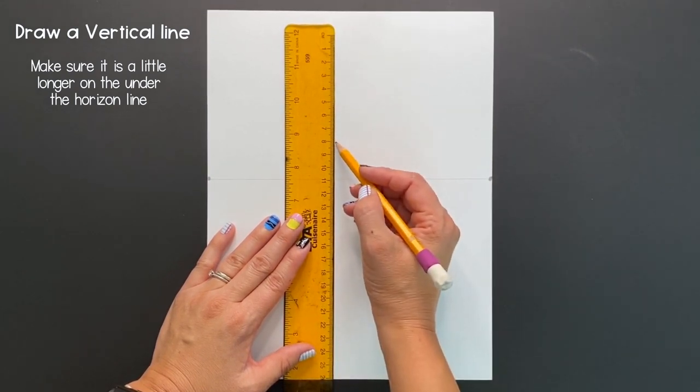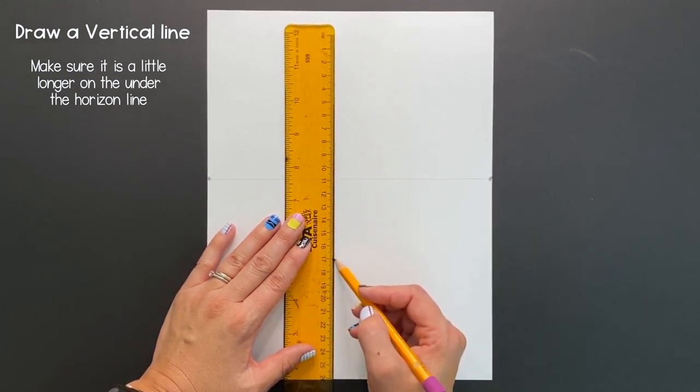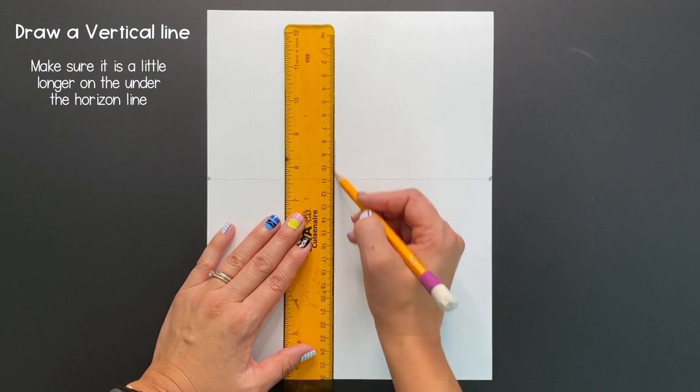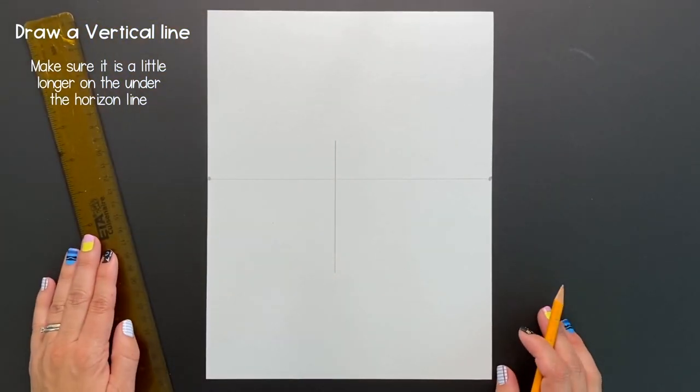Next draw a vertical line that intersects going through that horizon line making sure it's a little longer underneath.